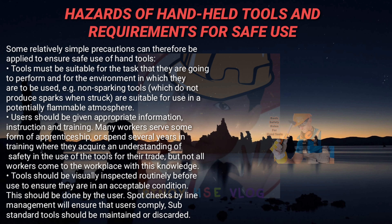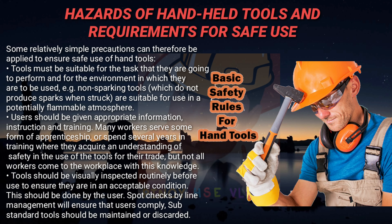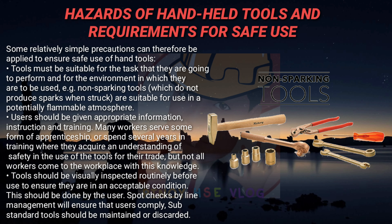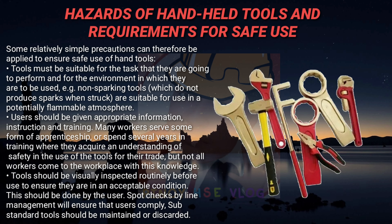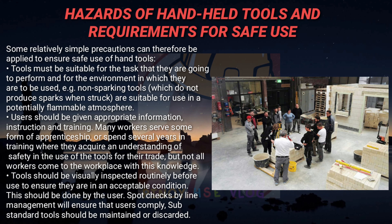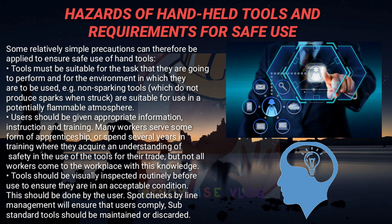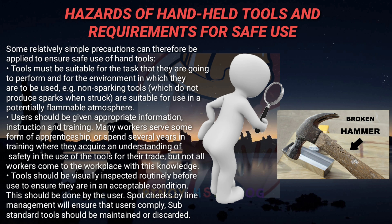Tools may be misused, i.e. used in an inappropriate way or for an inappropriate task – for example, a screwdriver used as a crowbar. Some relatively simple precautions can be applied to ensure safe use of hand tools. Tools must be suitable for the task they are going to perform and for the environment in which they are to be used – for example, non-sparking tools which do not produce sparks when struck are suitable for use in a potentially flammable atmosphere. Users should be given appropriate information, instruction, and training. Tools should be visually inspected routinely before use to ensure they are in an acceptable condition.